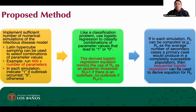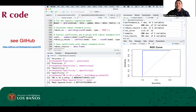The third step is optional. If in each simulation R0 can be computed — for example, R0 as the average number of secondary cases a primary case would produce in a completely susceptible population — then sequential logistic regression can be used to derive an equation for R0. We have created an R code that interested users can explore and use to implement our method, and it can be modified for other types of infectious disease compartmental models.